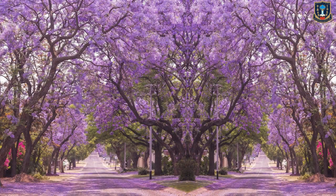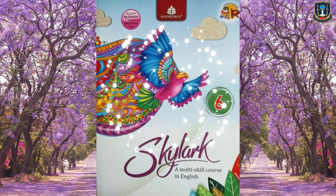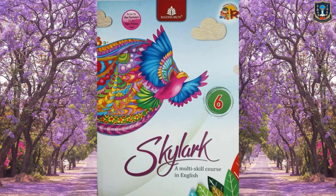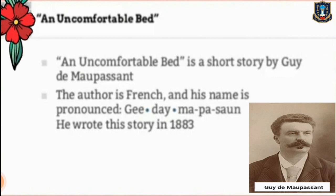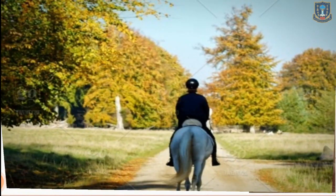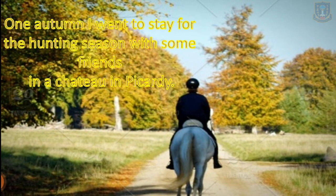Good afternoon, children. In today's class of English Literature, we shall take a new chapter from your Skylike Horse book. The name of the lesson is 'The Uncomfortable Bed.' This story is a short story written by Guy de Maupassant. The author is French, and his name is pronounced as Guy de Maupassant.